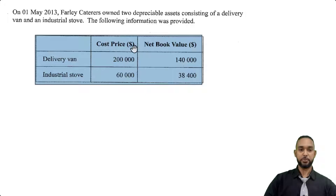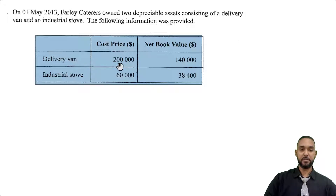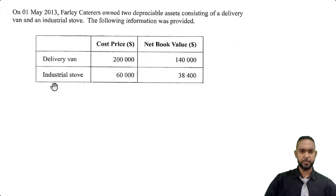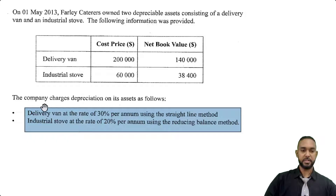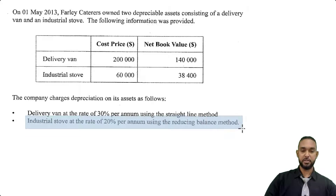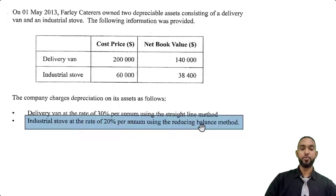As we just saw, net book value is the difference between the cost and the accumulated depreciation on the asset. So this table tells us there has already been depreciation on both assets. For the delivery van, the difference between $200,000 and $140,000 is $60,000 of accumulated depreciation. For the industrial stove, that's about $21,600 of depreciation. The company charges depreciation on the delivery van at 30% per annum using the straight line method, and on the industrial stove at 20% per annum using the reducing balance method.